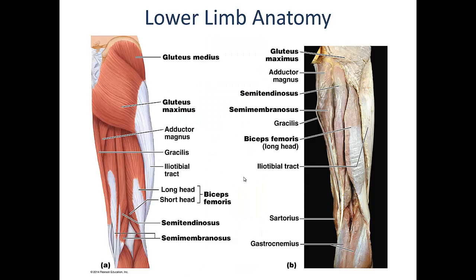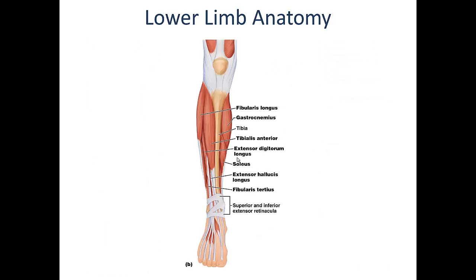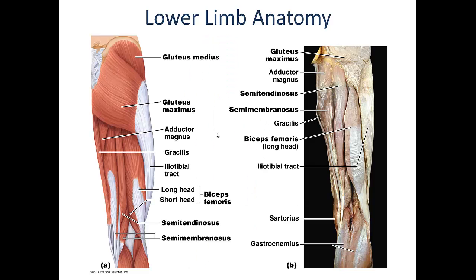Moving around to the posterior aspect of the thigh, we have the primary hip extensors and knee flexors. Most superficially we have the gluteus maximus, the most powerful hip extensor. This muscle can also be used for abduction as well as external rotation of the hip.